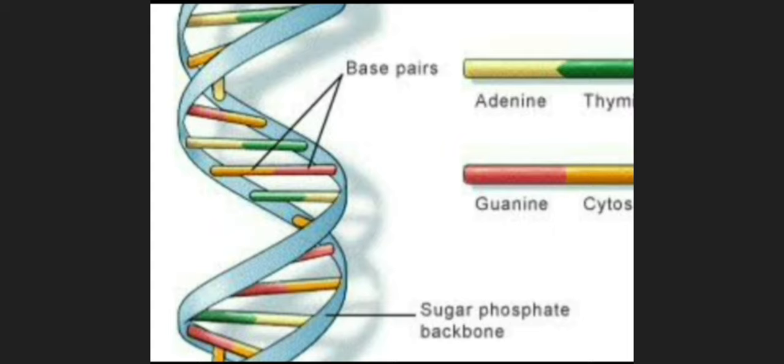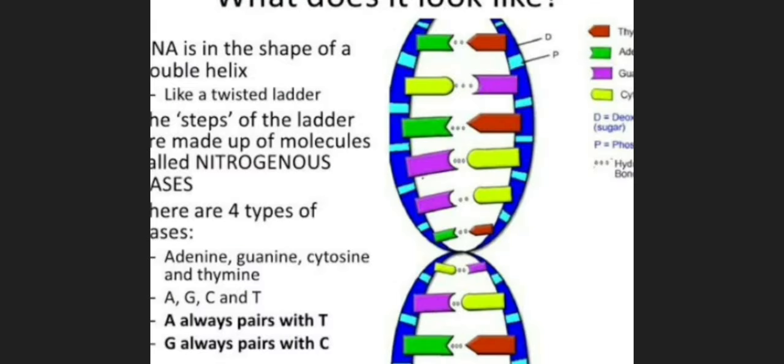If we look at here, this is the diagram of DNA, deoxyribose nucleic acid. It is a flexible ladder-like structure where there is pairing of nitrogenous bases. Adenine pairs with thymine, guanine always pairs with cytosine. These are the nucleotides and here there is pairing of these nucleotides.